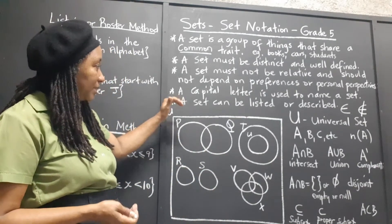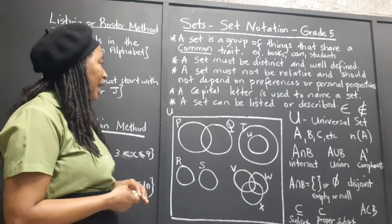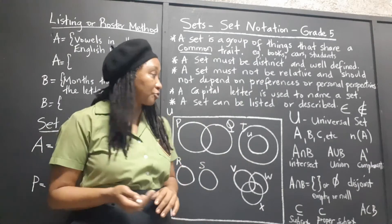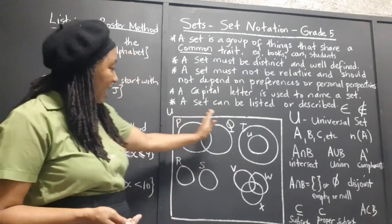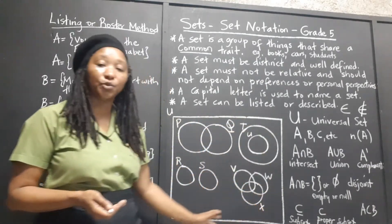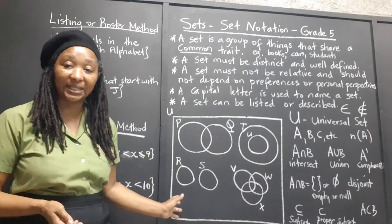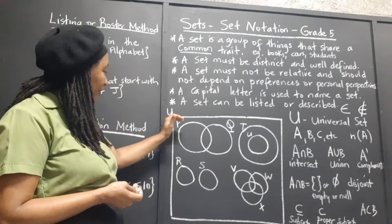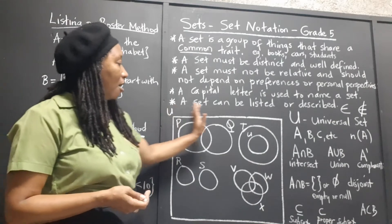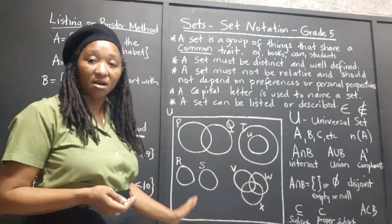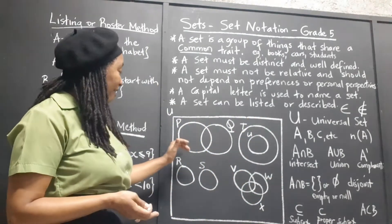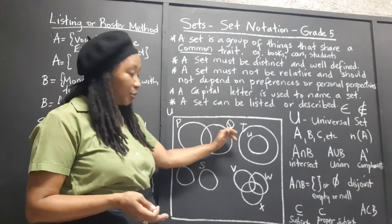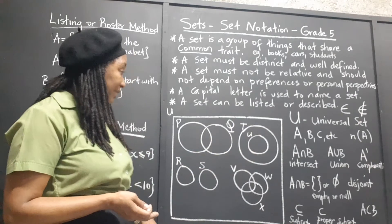A capital letter is usually used to name the set, and a set can be listed or it can just be described. This is a Venn diagram — it is used to represent sets. So we have the universal set, which is all the elements being considered, and we have the different sets, which capital letters are used to name.